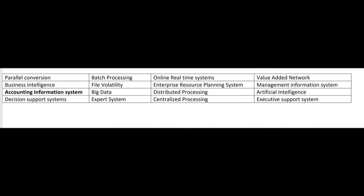An accounting information system, or AIS, supports day-to-day operations by collecting and sorting data about an organization's transactions. An AIS is also known as a transaction processing system, or TPS. It's a subunit of an MIS — a management information system. So the bigger picture is the MIS, and an accounting information system is part of that MIS.